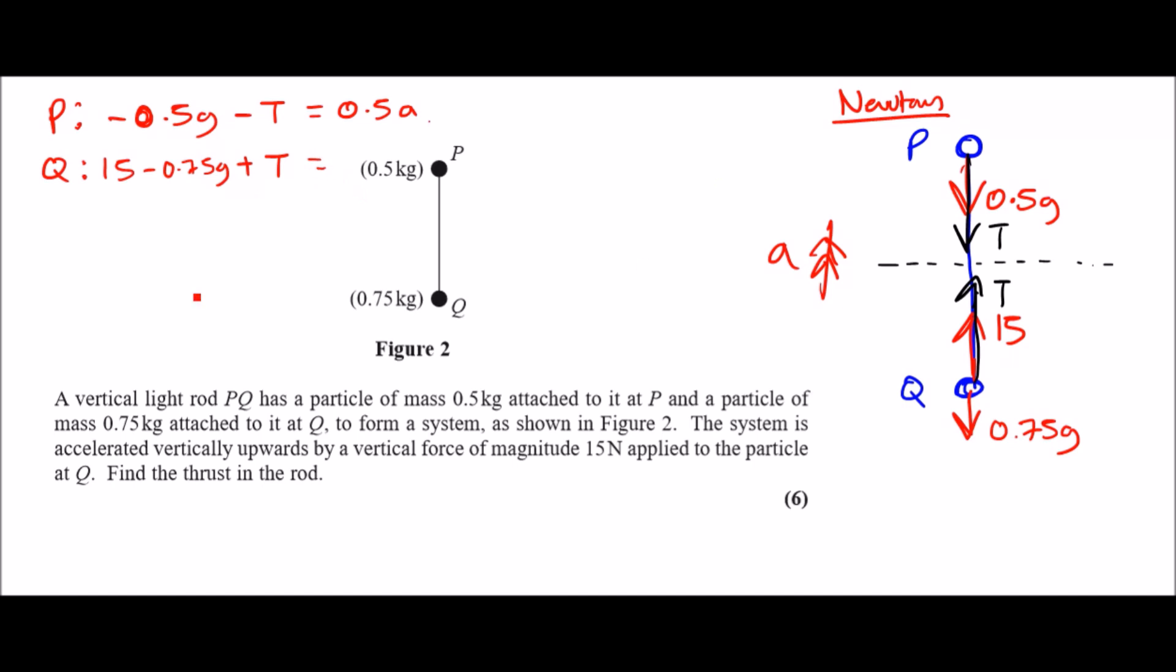The downward force would be minus 0.75g, and this is going to equal 0.75a. That's it guys, so this is where we are right now. Now all we have to do is resolve this. What I would do firstly is I want to eliminate T.